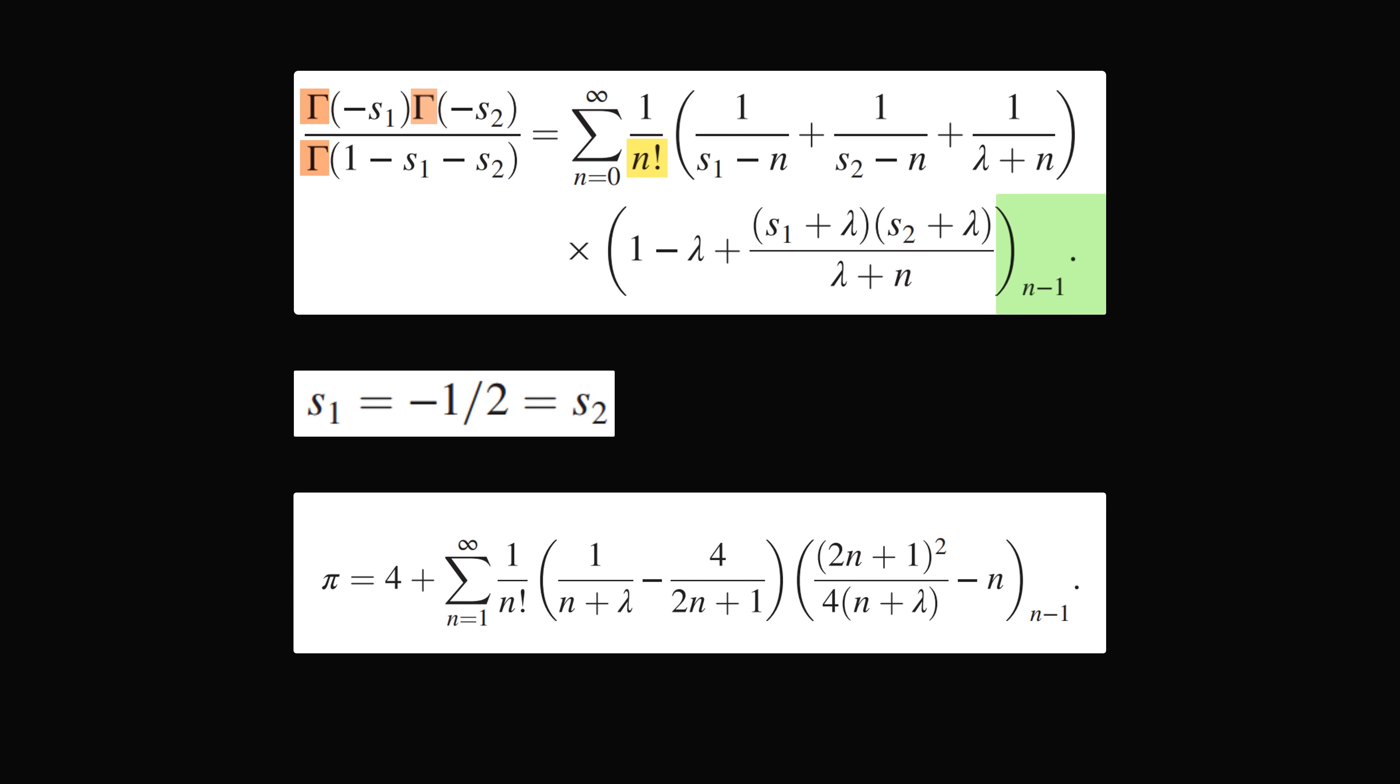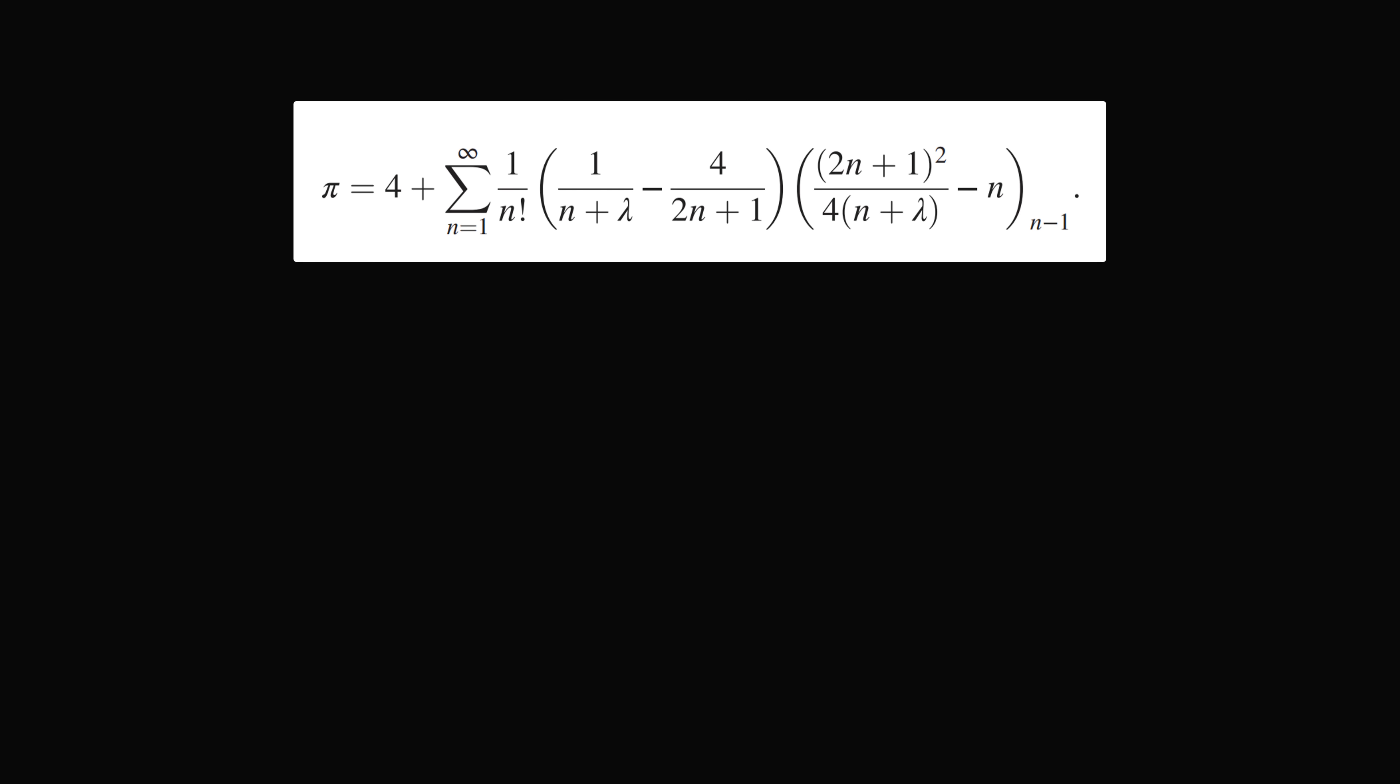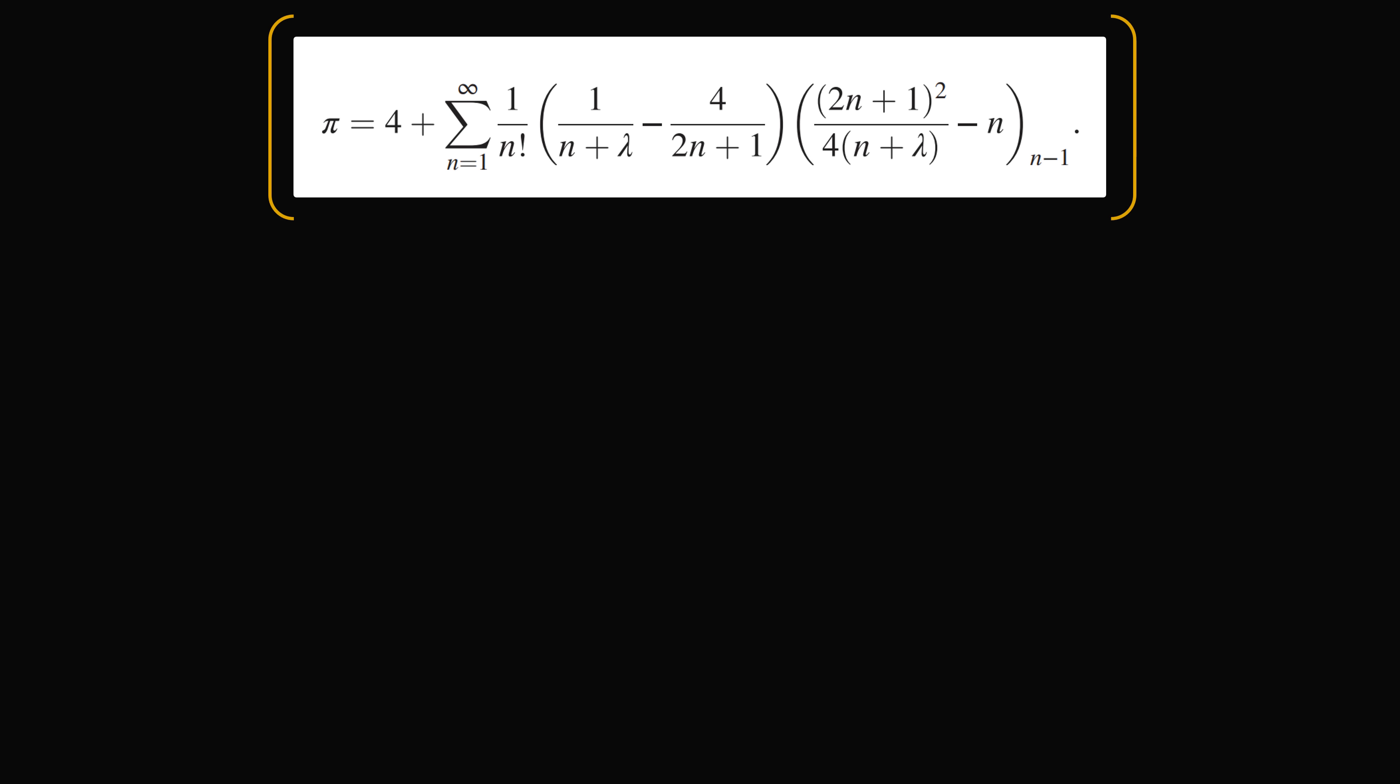And what's interesting about this new formula is it connects to the history of pi computation. If you take this formula and take the limit as this parameter lambda goes to infinity, and then you divide the entire thing by 4,